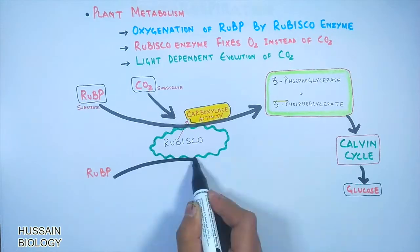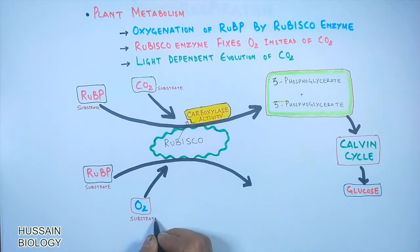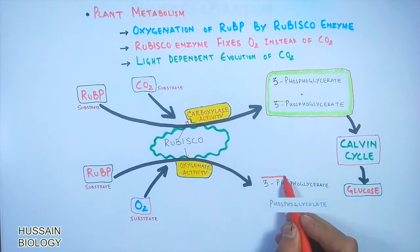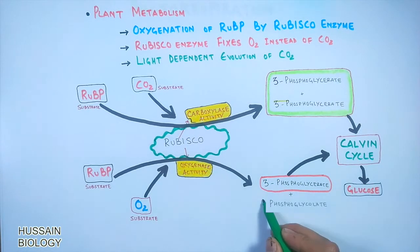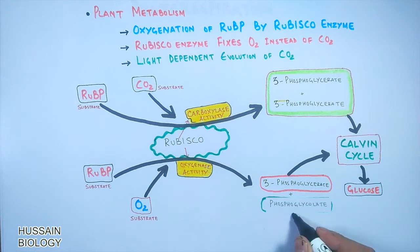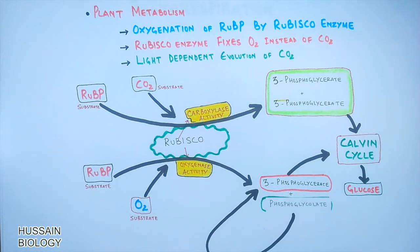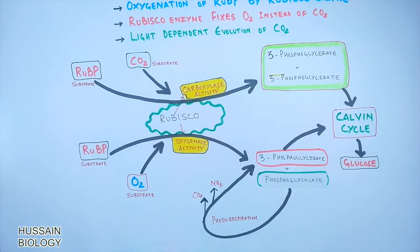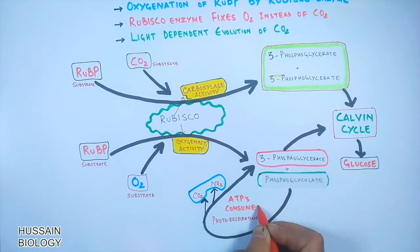When RUBP and oxygen are the substrates, rubisco shows oxygenase activity, producing two different molecules: one is 3-PGA, which enters the Calvin cycle, and the other is phosphoglycolate, which cannot enter the Calvin cycle directly. A separate plant metabolism pathway converts phosphoglycolate back into 3-PGA — this conversion process is called photorespiration, and it produces carbon dioxide and ammonia while also consuming ATP.